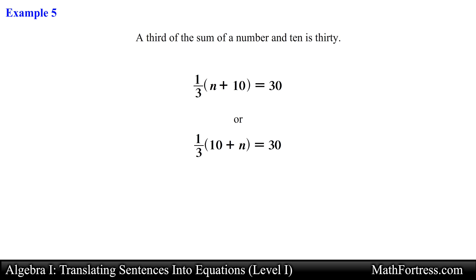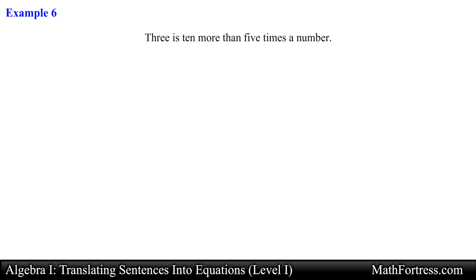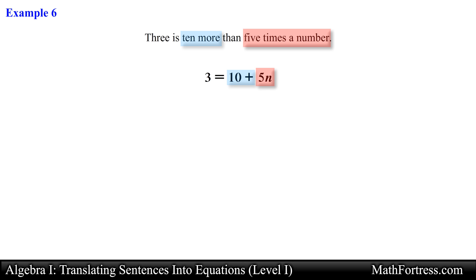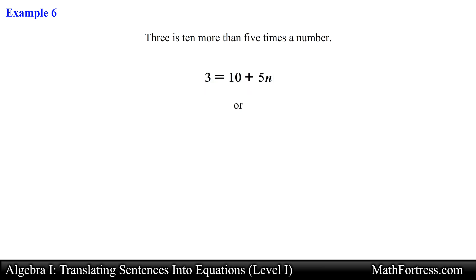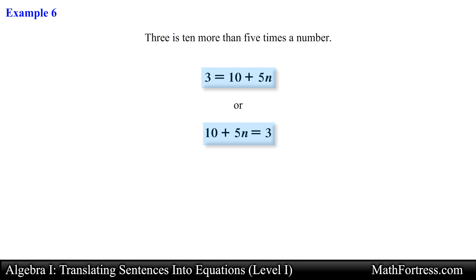Notice that every example so far has had the equal sign appear after some portion of the sentence. Let's try an example where the equal sign appears first: 'Three is ten more than five times a number.' We first write 3 equals, because the keyword 'is' appears first, followed by a sum of 10 and 5n because of the keywords 'more' and 'times.' The final expression is 3 equals 10 plus 5n, or equivalently 10 plus 5n equals 3. Both equations are essentially the same.